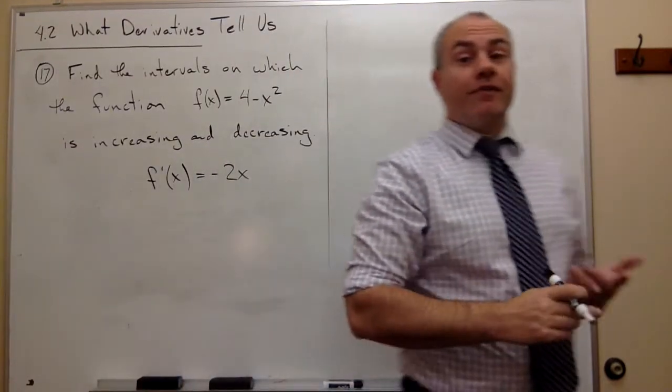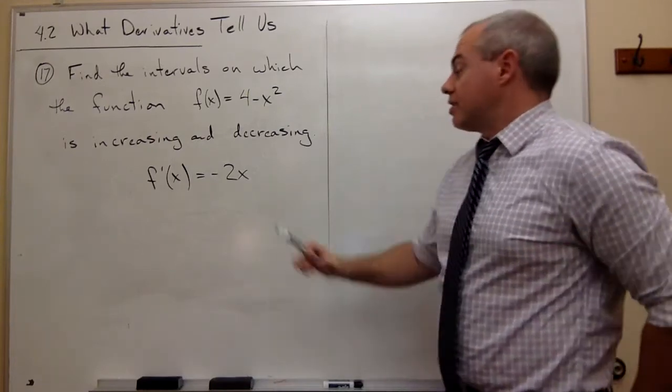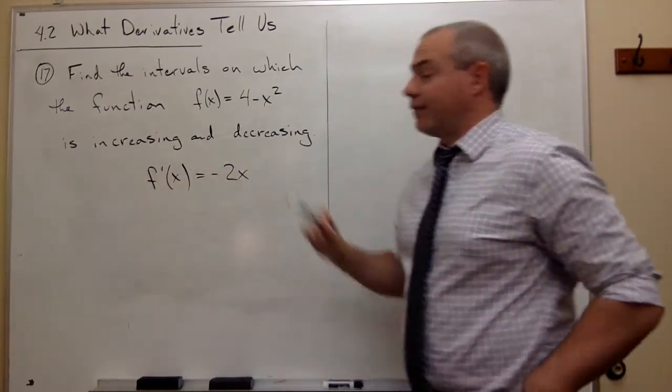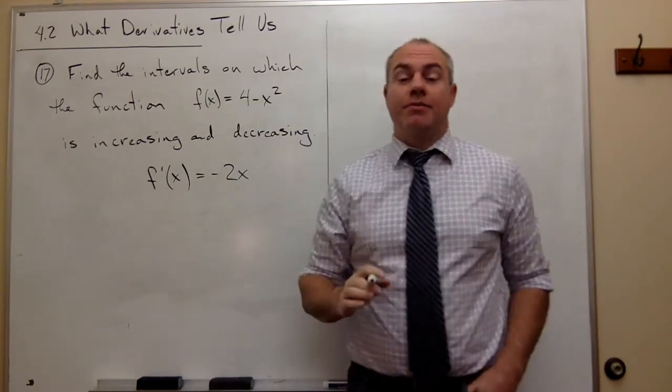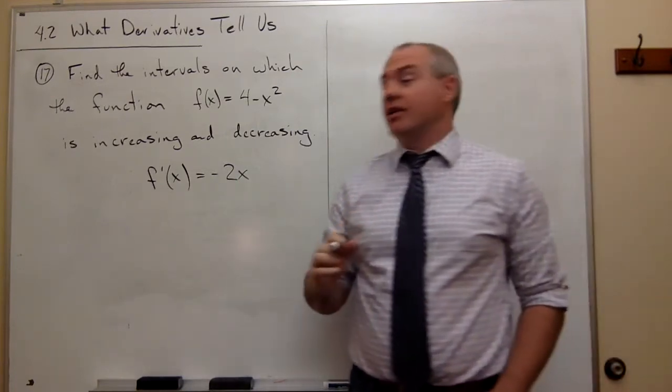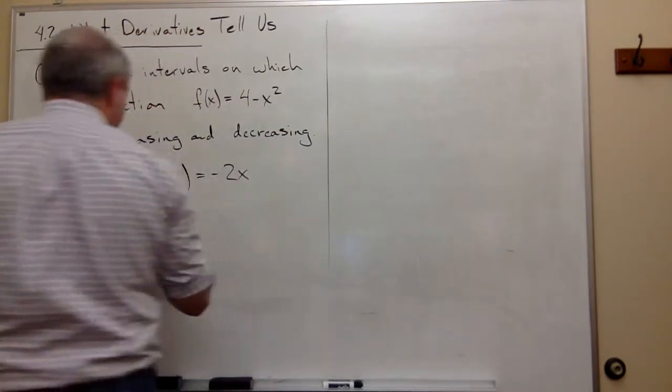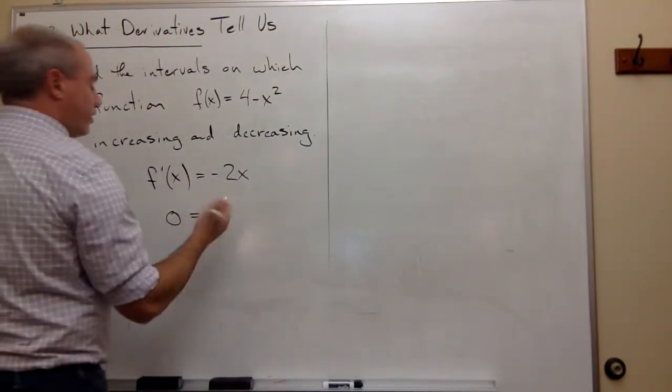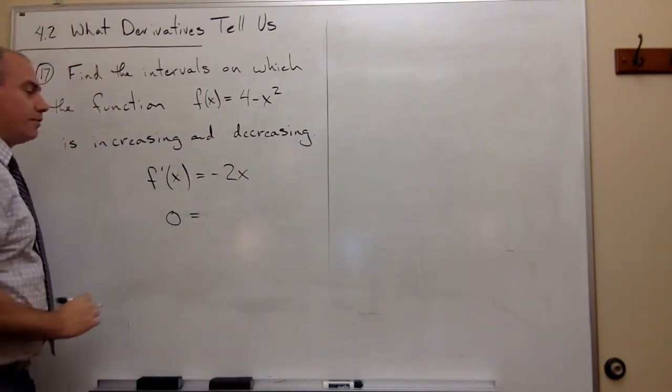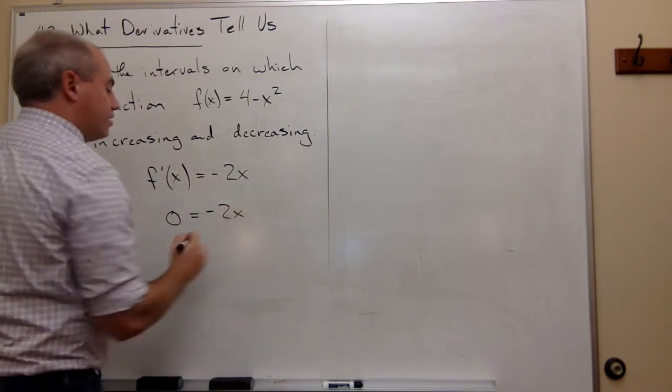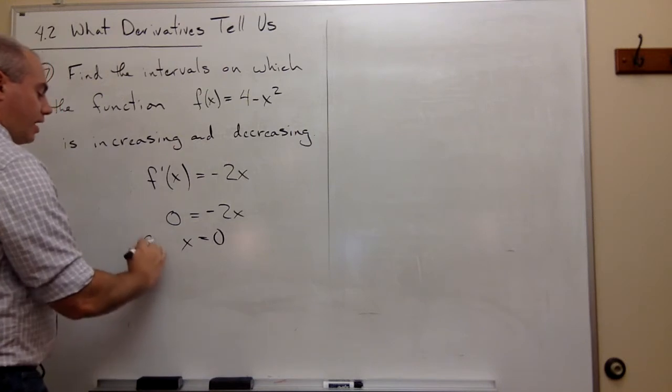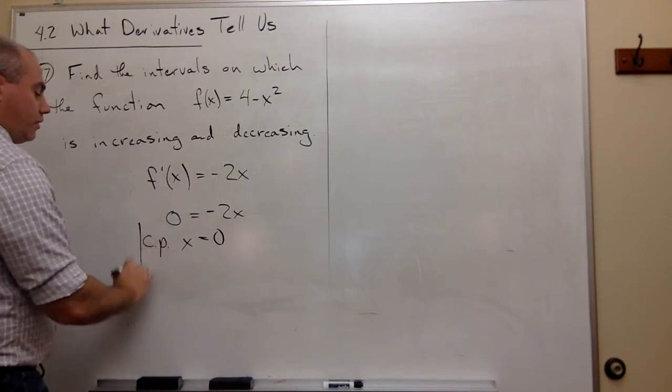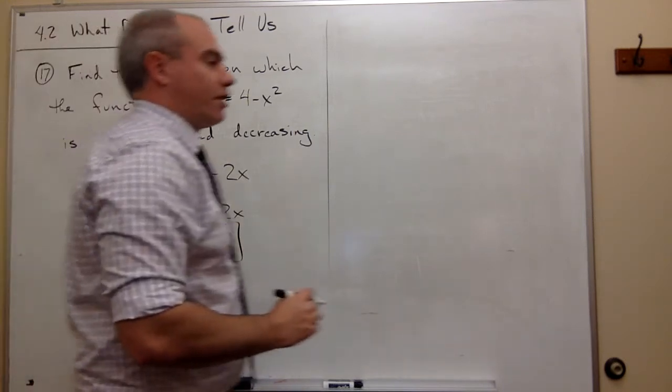What I want to know is where is this derivative equal to 0 or undefined. It can't be undefined because there's no bottom of the fraction, so it can just be equal to 0. If I set this equal to 0, I get 0 = -2x, so x = 0. This is my critical point, x = 0.